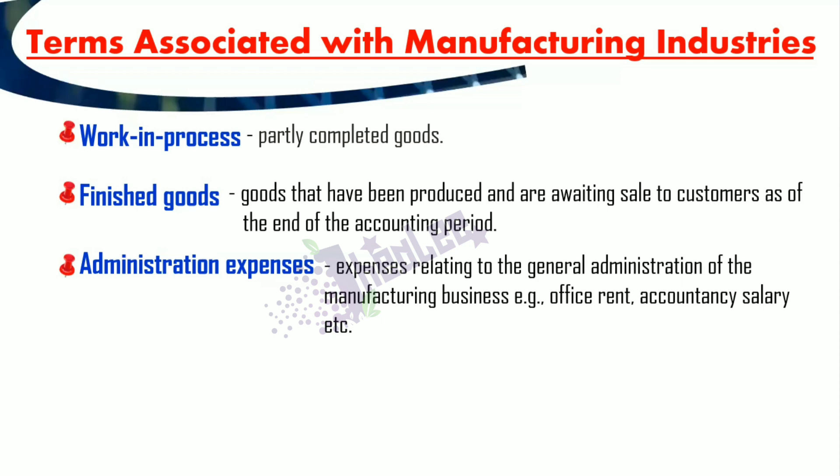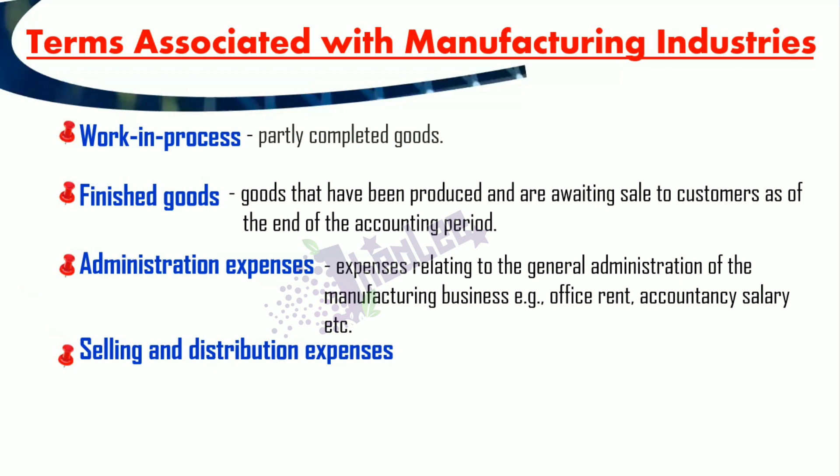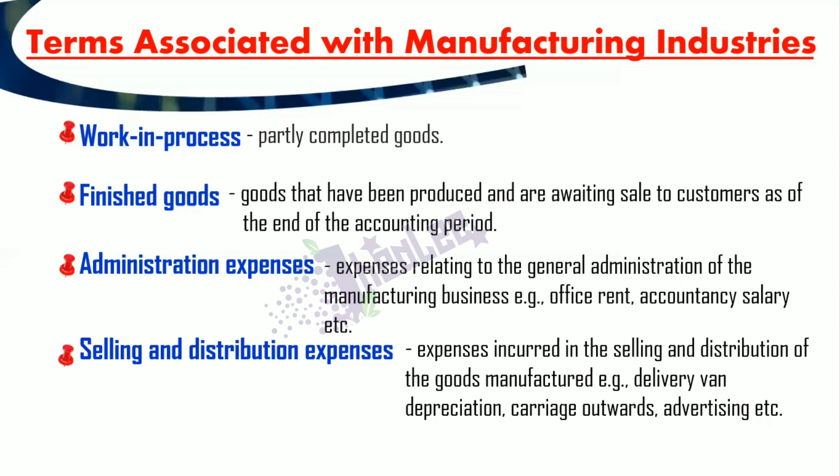Another category of expense associated with the manufacturing industry is selling and distribution expenses — any cost attributed to getting the product out to customers. These are expenses incurred in the selling and distribution of goods manufactured. Examples include delivery van depreciation, carriage outwards, advertising, salesman's salary, and sales commission.